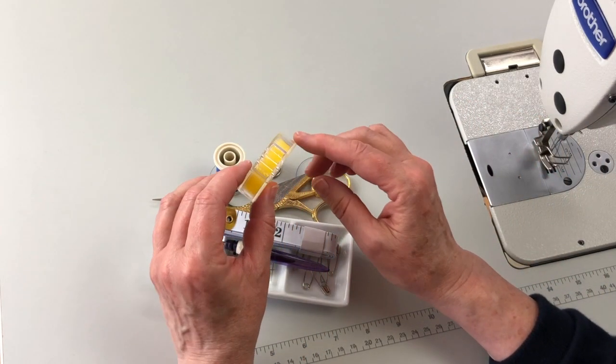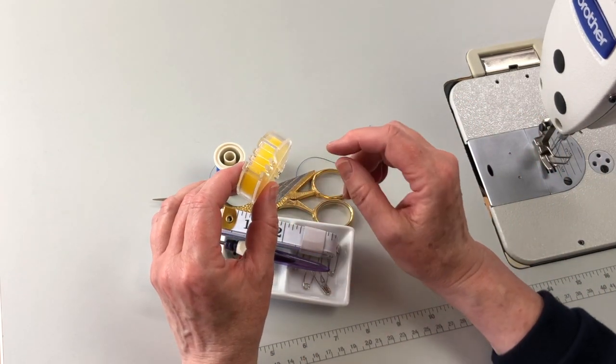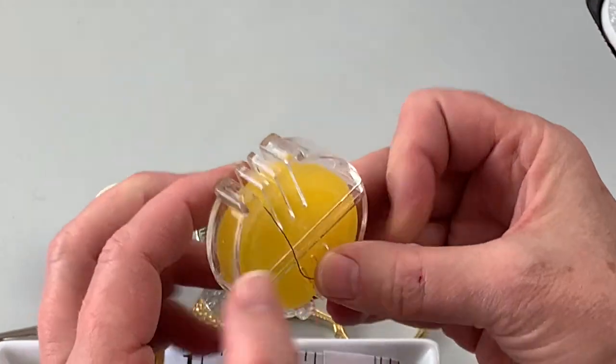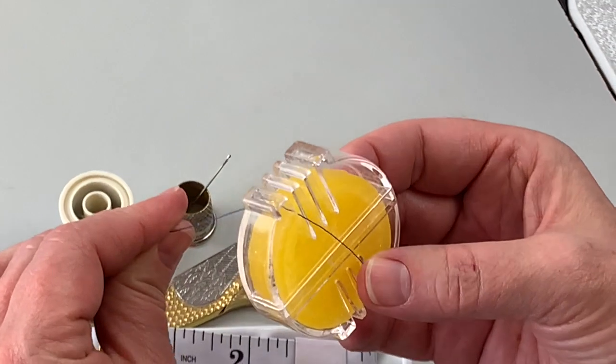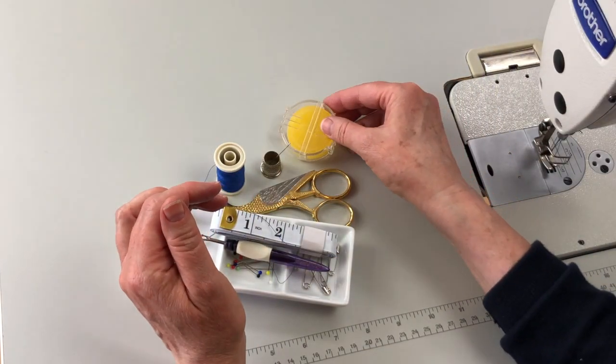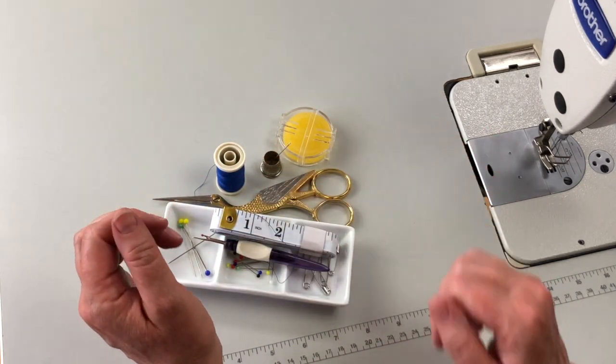And finally, and we'll talk more about this in a later lesson, this is a cake of wax. And what it does simply is it puts a coating on the thread, so that it makes it much more easy to slide through the fabric. So here you have it, your basic sewing kit.